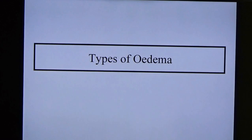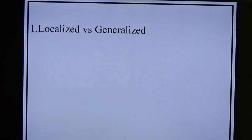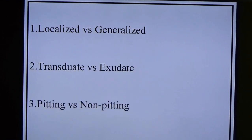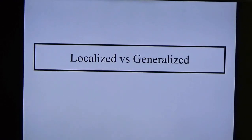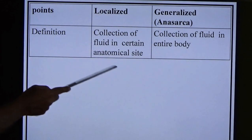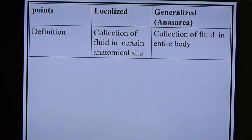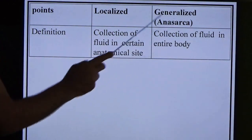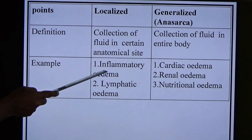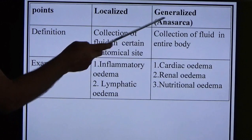Types of edema: for our purpose, three types — localized vs. generalized, transudate vs. exudate, and pitting vs. non-pitting. Localized edema: collection of fluid in a certain anatomical site only. Generalized edema (otherwise known as anasarca): collection of fluid in the entire body or most parts. Examples of localized: inflammatory edema, lymphatic edema.